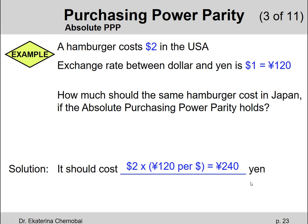First, at the Japanese border they'd confiscate all the burgers — it's a perishable product, it can go bad. Second, there are typically import restrictions on how much of different things you can bring into a country. On top of that, you have to pay for your flight to Japan, which already kills at least part of your potential profit. There are all these real-life restrictions that prevent these profit opportunities from being realized.